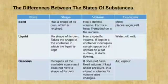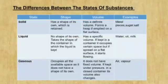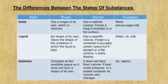Now let's learn the difference between the states of substance. As we know, there are 3 states of substance. Solid has a shape of its own which is retained. Retained means continue to hold. Solid has a definite volume and form. If emptied on a flat surface, it forms a heap — a large amount. For example, metal pieces, sugar, salt, etc.